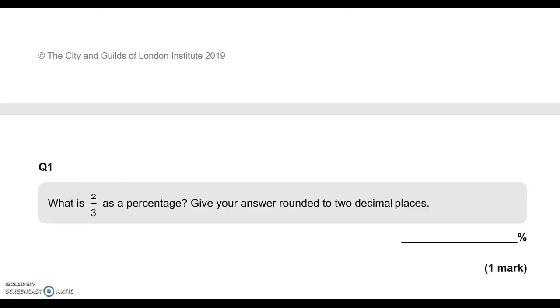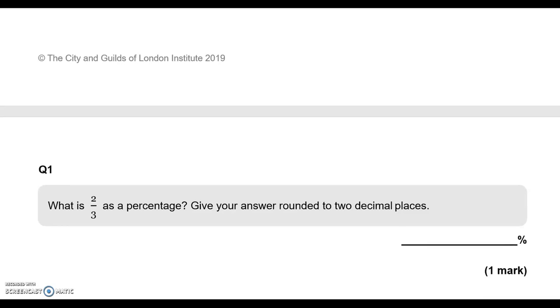Question number one: what is two-thirds as a percentage? Give your answer rounded to two decimal places. Two-thirds is 2 divided by 3 which is 0.666 recurring, and as a percentage this is 66.666 and so on. We need to round this to two decimal places, and because this is a six, this one in front of it will become a seven. So 66.67%.